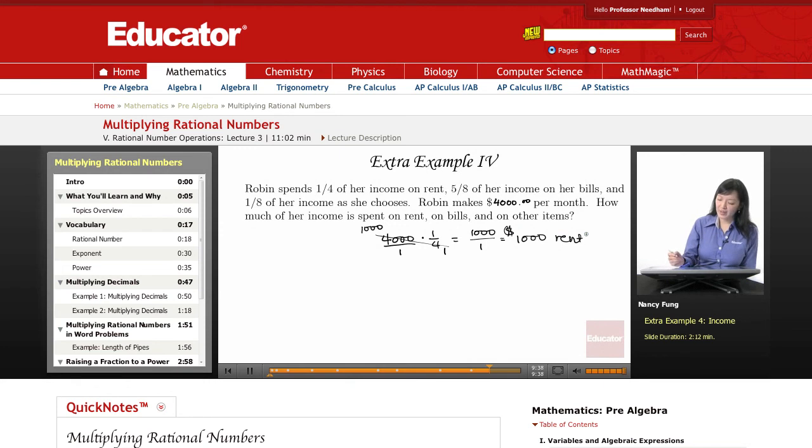Next, she spends five-eighths of her income on bills. So let's take 4,000 over 1 and multiply by five-eighths. Once again, we can cross-simplify. We can divide by 4 and get 2, divide by 4 and get 1,000. That will help us work with smaller numbers.